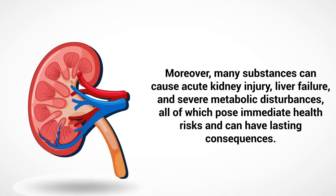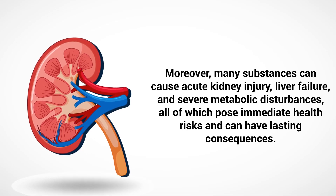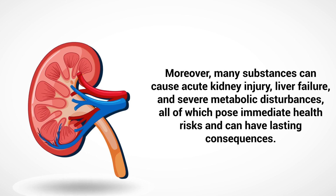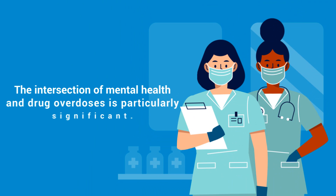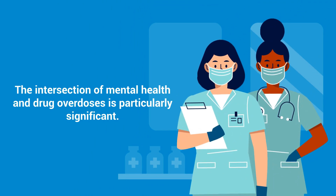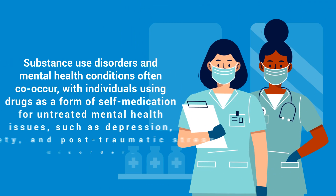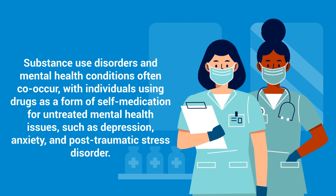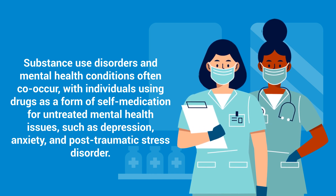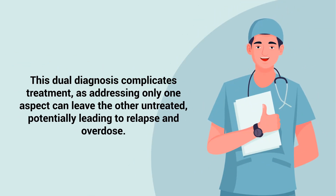Moreover, many substances can cause acute kidney injury, liver failure, and severe metabolic disturbances, all of which pose immediate health risks and can have lasting consequences. The intersection of mental health and drug overdoses is particularly significant. Substance use disorders and mental health conditions often co-occur, with individuals using drugs as a form of self-medication for untreated mental health issues, such as depression, anxiety, and post-traumatic stress disorder. This dual diagnosis complicates treatment, as addressing only one aspect can leave the other untreated, potentially leading to relapse and overdose.